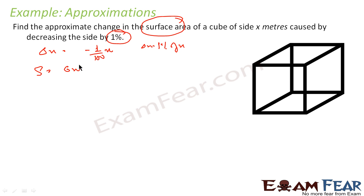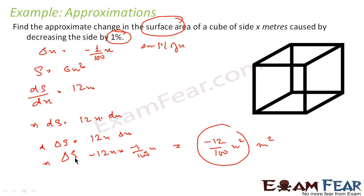Surface area is nothing but 6x squared. I have to find dS. So let us differentiate by x. dS by dx is nothing but 12x. So my dS is nothing but 12x dx. Let us assume the change in surface area is less. Delta S is nothing but 12x delta x, and this is nothing but 12 into x into delta x, which is minus 1 by 100 into x. And that is nothing but minus 12 by 100 x squared meter squared. It is a negative change.